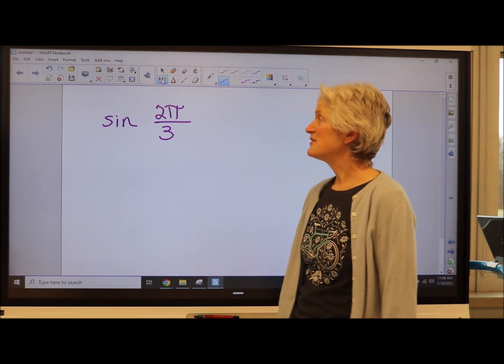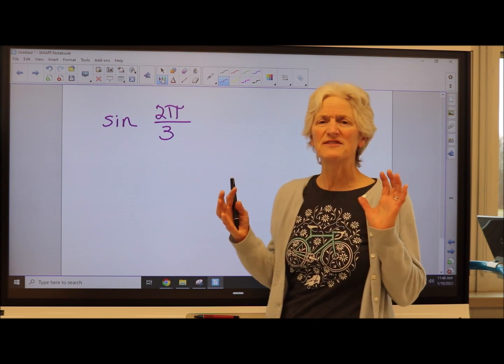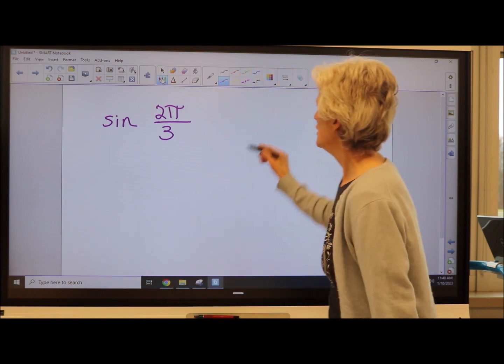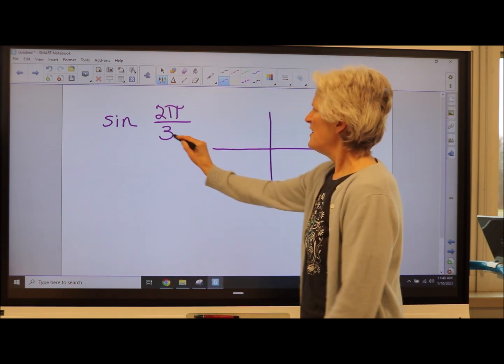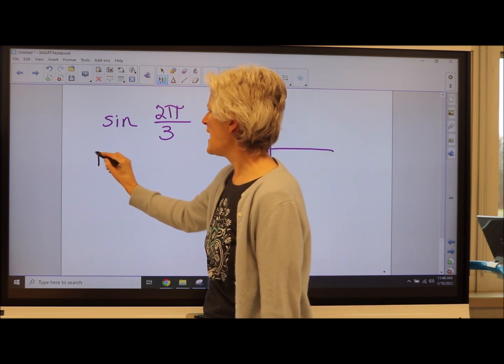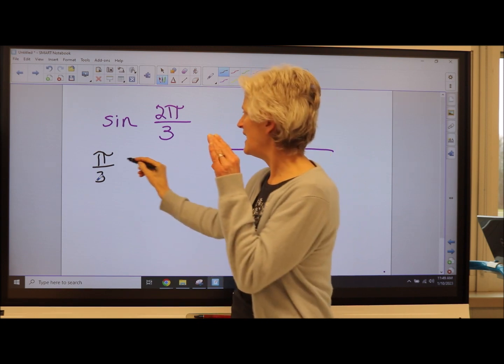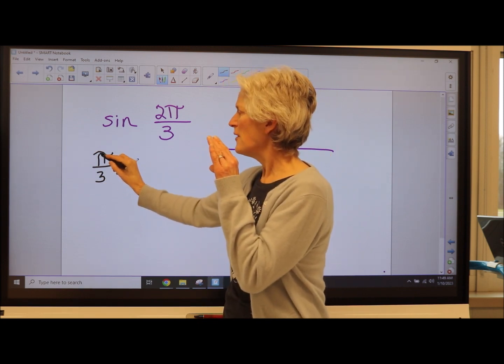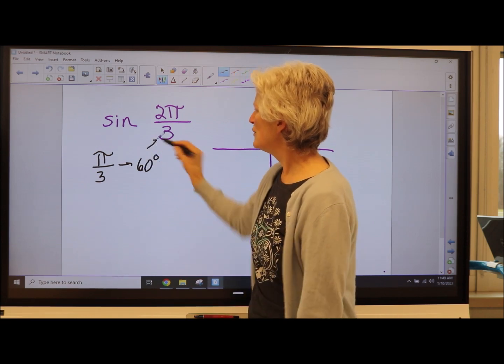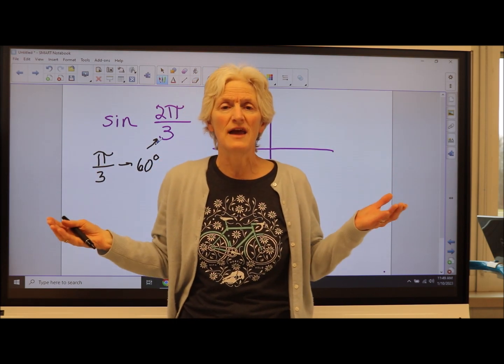If I wanted to evaluate the sine of two pi over three, again I could try to convert this to degree land, but I'm not going to. I'm going to embrace radians. So here we go. The denominator is a three. Okay? So I know that my reference triangle is going to be a pi over three angle, and a third of 180 is 60 degrees.